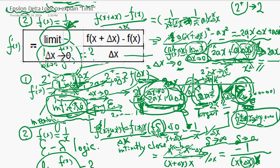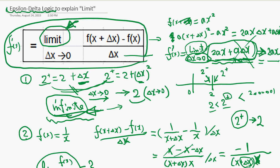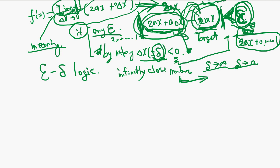So finally we know the derivative function is defined by the limit as delta x goes to zero. Now let's make a similar analogy before we finish this video. Say you have a rabbit, and the rabbit jumps half the distance to the wall in one second.